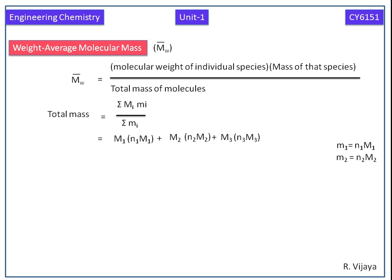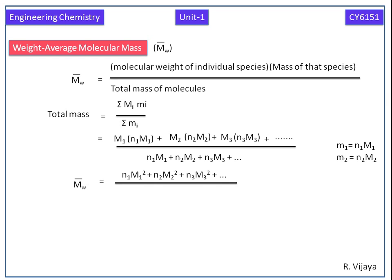We get a new equation. That value is equal to N1M1 square plus N2M2 square plus etc., whole divided by N1M1 plus N2M2 plus etc. So total mass can be calculated by using summation of capital NI, capital MI square divided by summation of capital NI, capital MI.